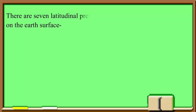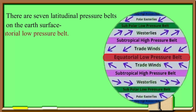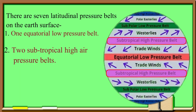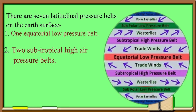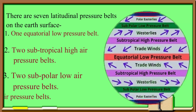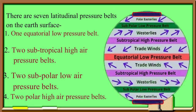There are 7 latitudinal pressure belts on the earth's surface: 1 equatorial low pressure belt, 2 subtropical high air pressure belts, 2 subpolar low air pressure belts, and 2 polar high air pressure belts. Look at the diagram — we can see a pattern of alternating high and low pressure belts.